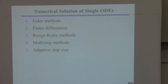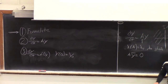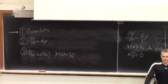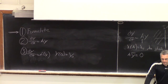We're going to start today by talking about how you solve a differential equation that looks like this — an initial value problem where the function is nonlinear. We can't solve it analytically, so I'm going to talk about different ways to solve it, introducing Euler methods, finite difference methods more generally, and then some more advanced methods.